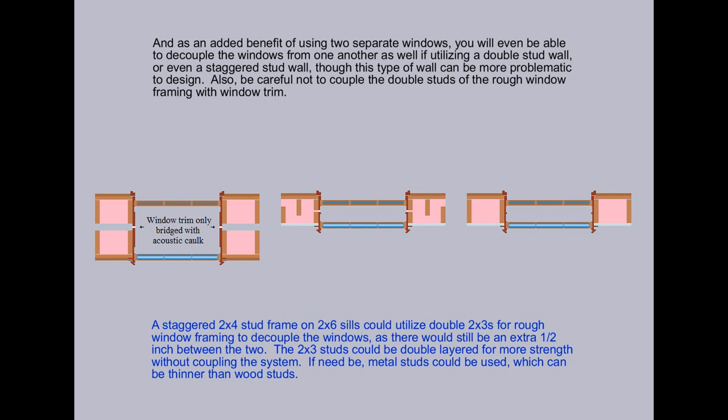And as an added benefit of using two separate windows, you will even be able to decouple the windows from one another as well, if utilizing a double stud wall, or even a staggered stud wall, though this type of wall can be more problematic to design. Also, be careful not to couple the double studs of the rough window framing with window trim.